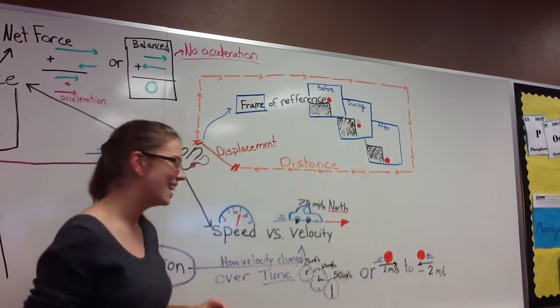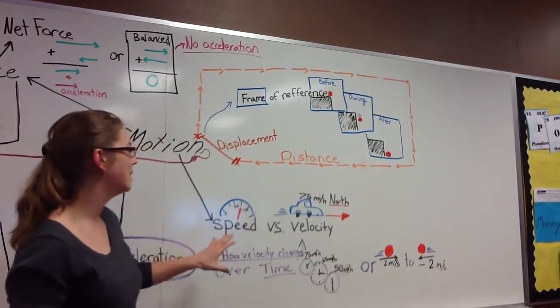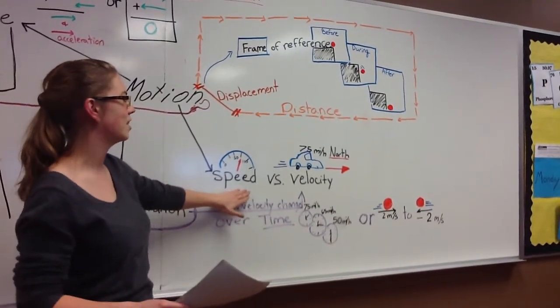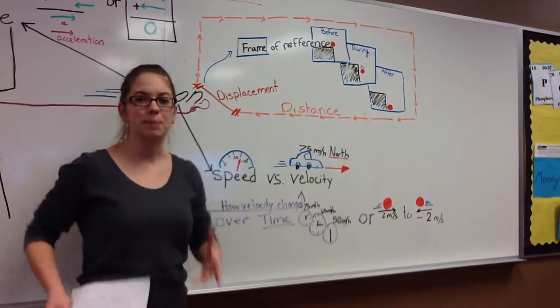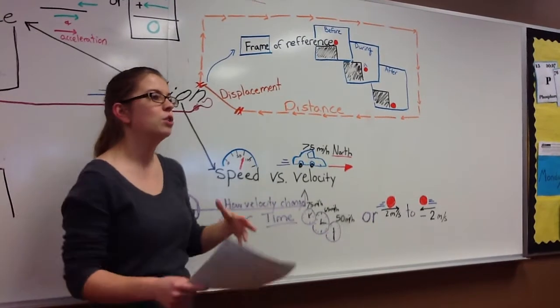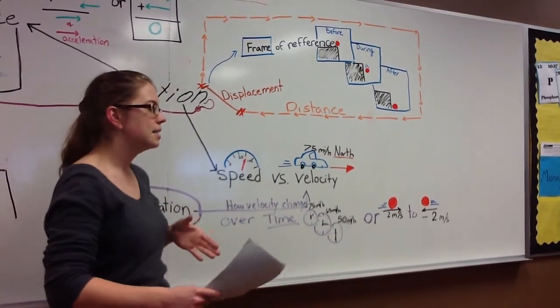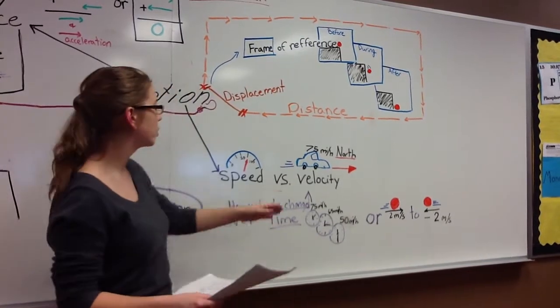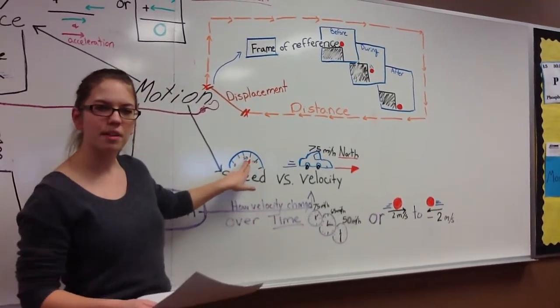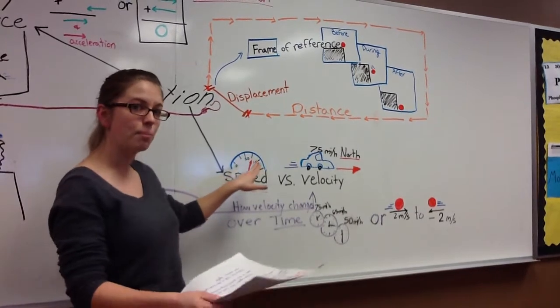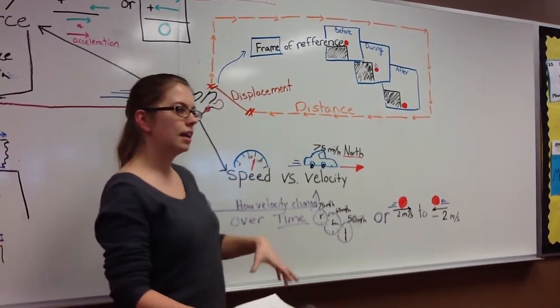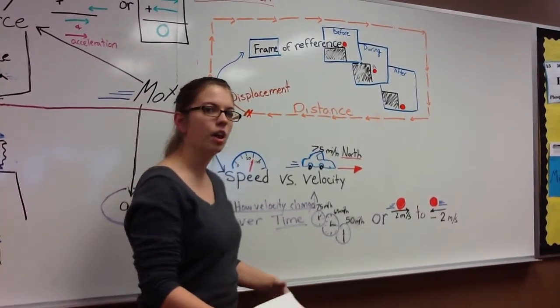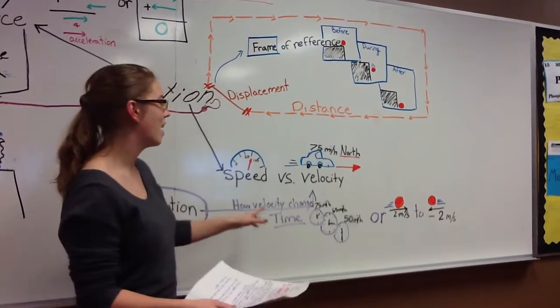Our next concept is going to be speed versus velocity. You're all familiar with what speed is. Anyone who's ever driven knows that speed is a distance that you've gone in a certain amount of time. For example, if you're going, this looks like it's right about 75 miles an hour. If you go 75 miles an hour, you know that in an entire hour of driving, you'll have traveled a distance of 75 miles.